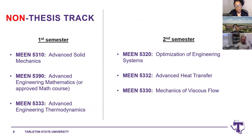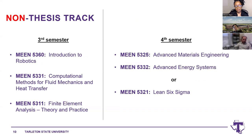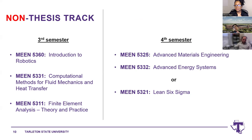For the non-thesis track, in the first semester you take Advanced Solid Mechanics, Advanced Engineering Mathematics, and Advanced Engineering Thermodynamics. You move on through second, third, and fourth semesters. In the last semester, there are two core course options — you can choose one: Lean Six Sigma or Advanced Energy Systems. The non-thesis track is straightforward — you take the designed courses for graduation.